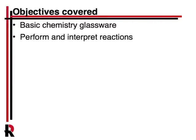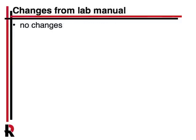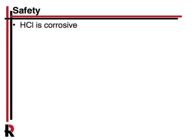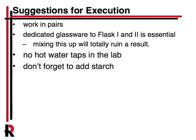This lab will cover basic chemistry glassware and involves performing and interpreting reactions with a quantitative component. It's pretty much done as-is from the lab manual with not a lot of changes to worry about. Safety-wise, there are no particular hazards, though there's a little HCl that could be corrosive so be careful there. You're going to work in pairs, and by far the biggest problem is getting your glassware dirty. You'll have one set of flasks for flask one and a separate set for flask two — do not mix those. You do not want to prematurely start the clock reaction, so make sure you keep your glassware straight. It would help to have multiple graduated cylinders and beakers so you can work without crossing the streams.